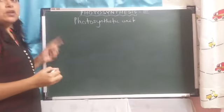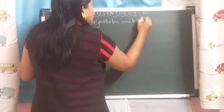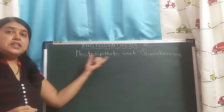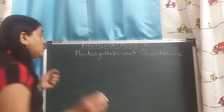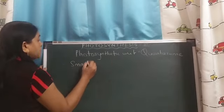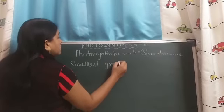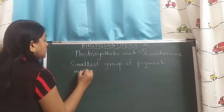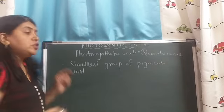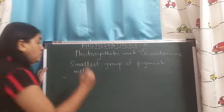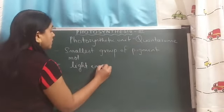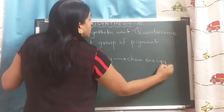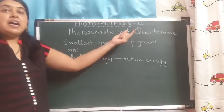Photosynthetic unit is also called as the quantazone. Photosynthetic unit is the smallest group of pigment molecules which take part in the conversion of light energy to chemical energy. So, photosynthetic unit is called as quantazone.